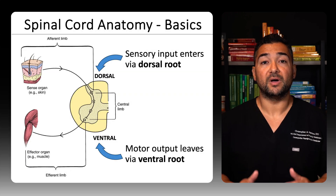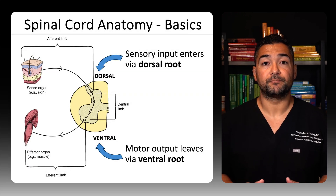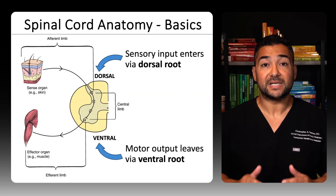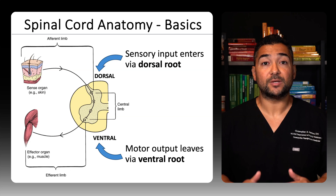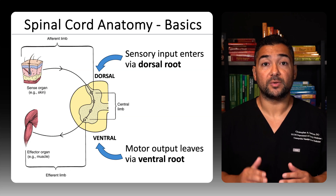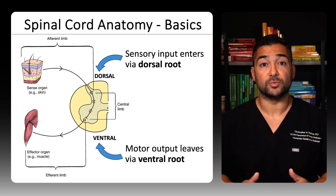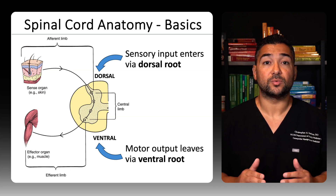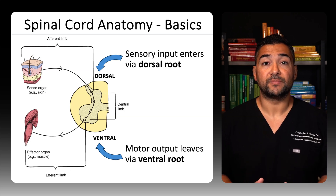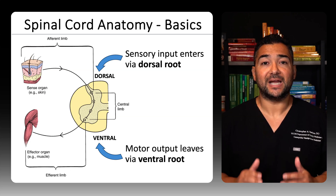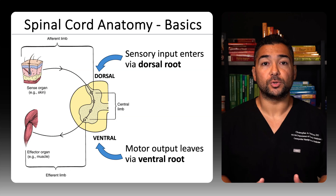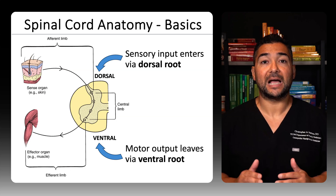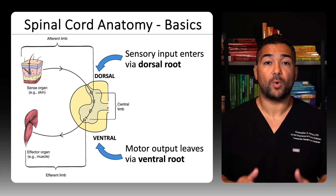Here's a quick review of spinal cord organization. Sensory input enters the spinal cord through the dorsal root, while motor output exits through the ventral root. This basic anatomy is crucial to understanding how reflex arcs are wired.